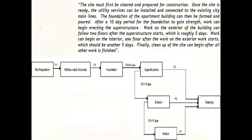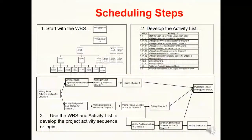Key steps in scheduling: we start with the client to understand requirements and identify the Work Breakdown Structure — much like an organizational structure — to develop a clear understanding of key work packages and their relationships. Then we identify the activities and put them in a logical relationship to develop precedence diagrams.